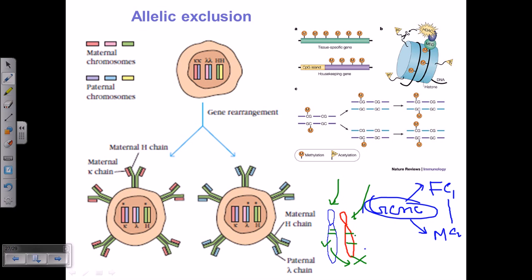Similarly, if the successful rearrangement occurs in the red chromosome, it will eventually block the expression of the same genes from the blue chromosome. And if the rearrangement of the gene occurs neither in the blue nor in the red chromosome, then that gene is unexpressible inside the cell — the cell will lack the expression product of that gene. That is what is called allelic exclusion.